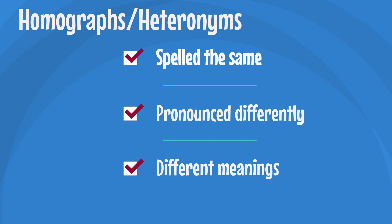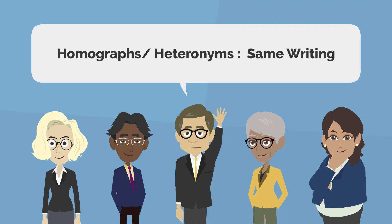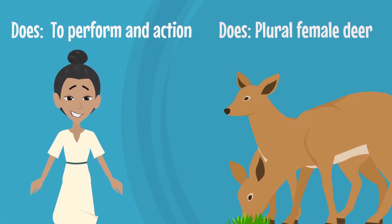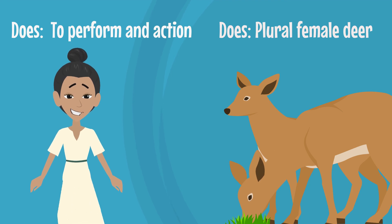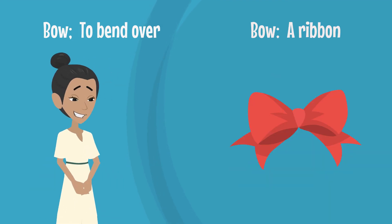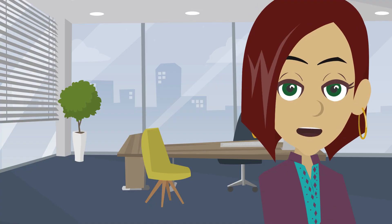Homographs, or heteronyms, are words that are spelled the same, pronounced differently, and have different meanings. The key to remember is that 'graph' means writing — same writing. Examples of these would be 'does' as in a performance, and 'doe' as in a female deer; and 'bow' meaning to lean forward, and 'bow' meaning to tie a ribbon.